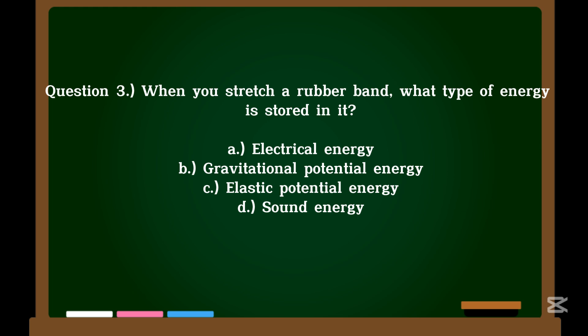Question 3. When you stretch a rubber band, what type of energy is stored in it? A. Electrical energy. B. Gravitational potential energy. C. Elastic potential energy. D. Sound energy.